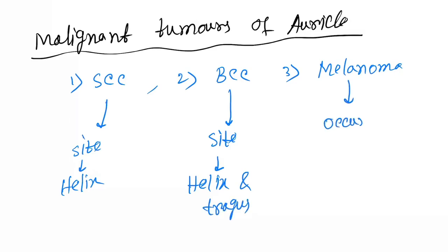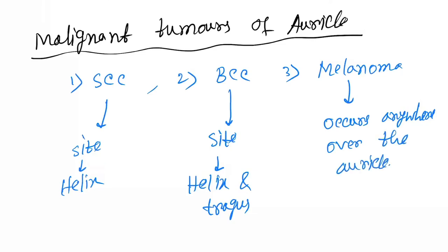Melanoma occurs anywhere over the auricle. Now let's move to the external auditory canal, which also has benign and malignant tumors.